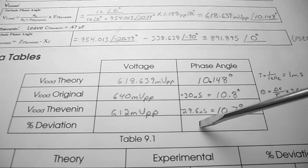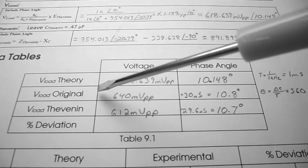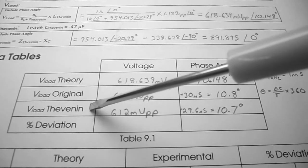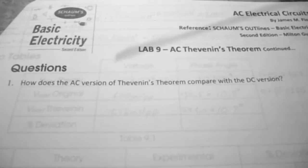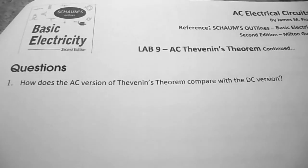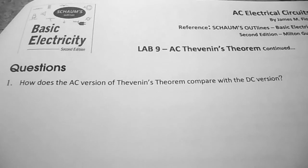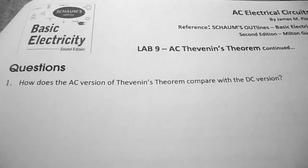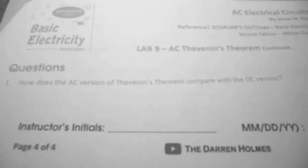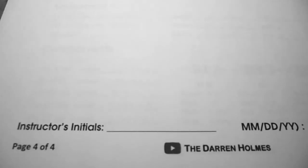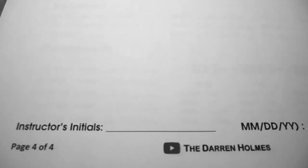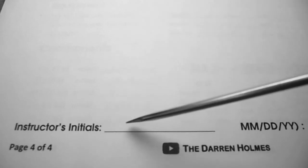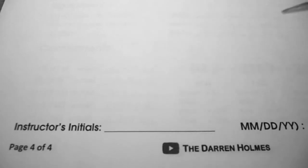For procedure step six, determine the deviation between the original and Thevenin circuits — the calculation is left for you to complete. On the last page of the lab there are three questions to answer based on your calculations, observations, and conclusions. When you've completed the lab, leave your circuit set up on your trainer so your instructor can verify its operation and initial your lab to indicate it is complete.